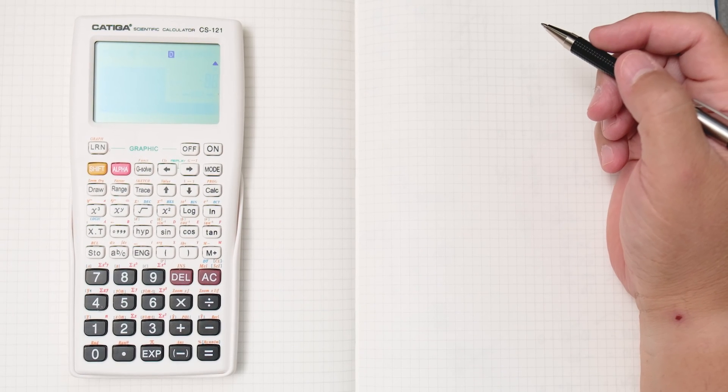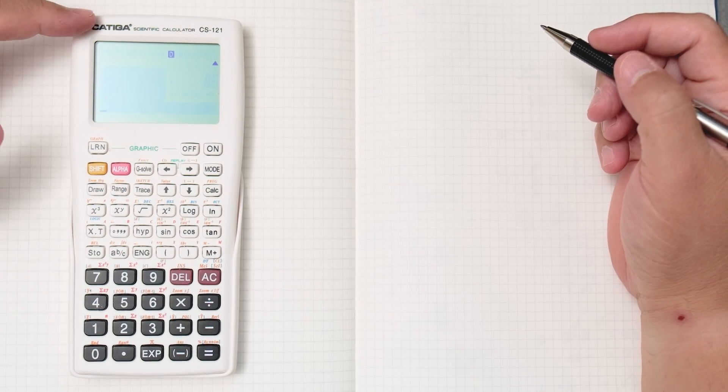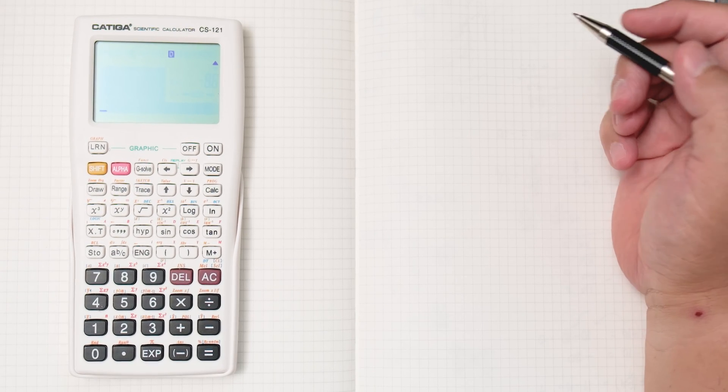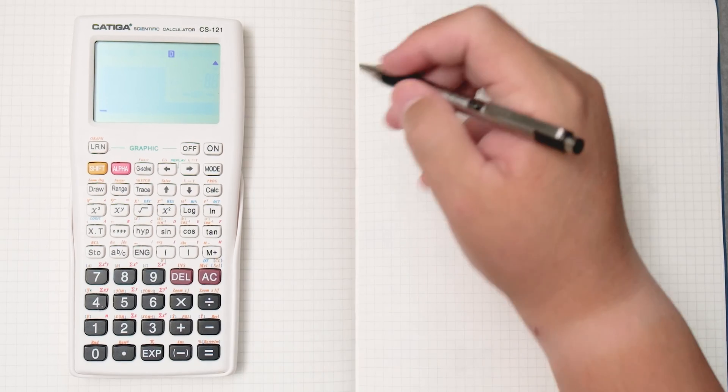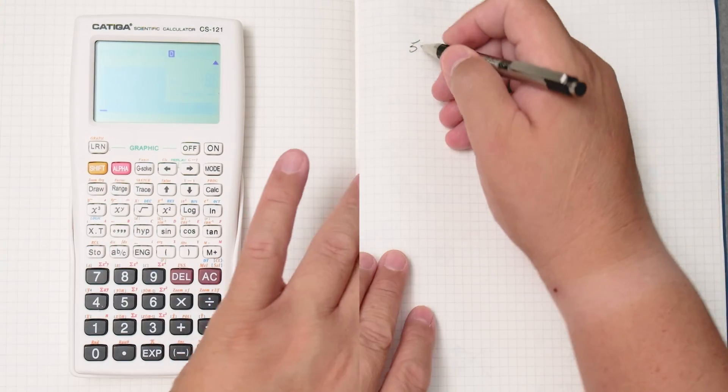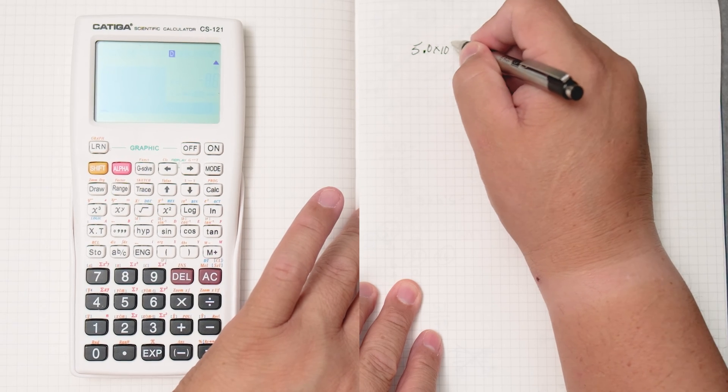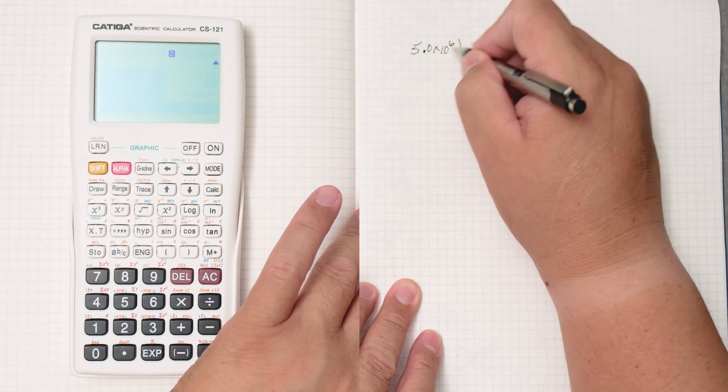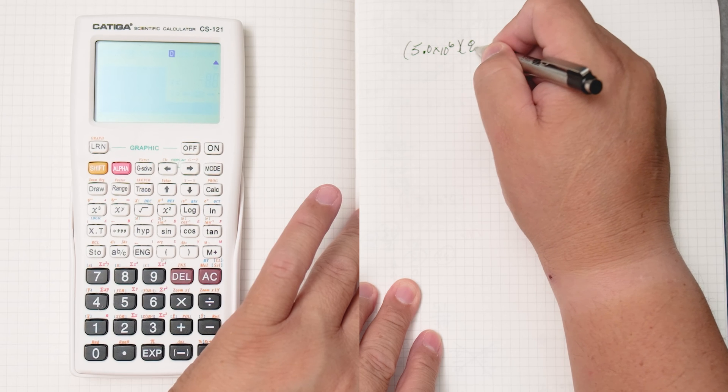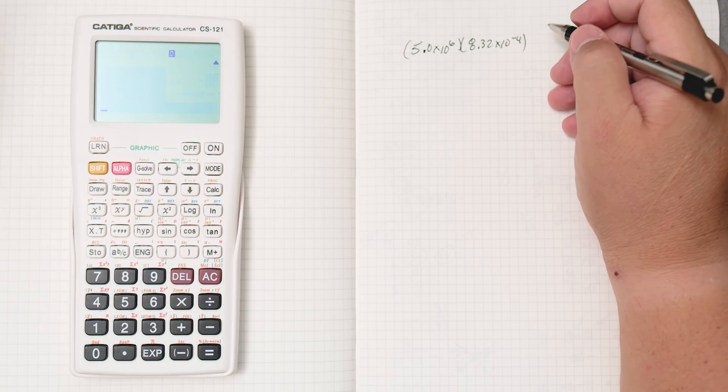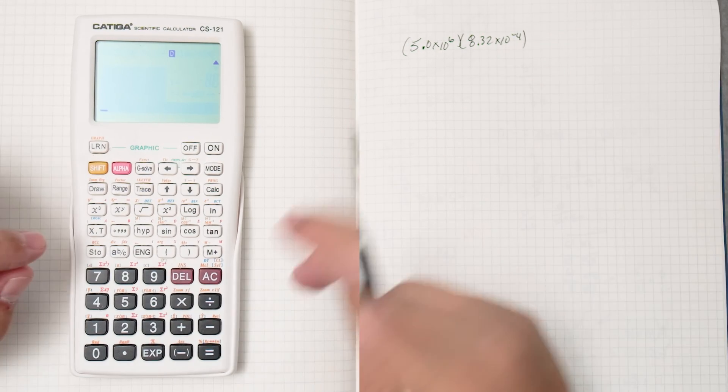In this video, we're going to be using the Casio fx-991 ES to do scientific notation. So let's say we were doing 5.0 times 10 to the 6 times 8.32 times 10 to the minus 4.